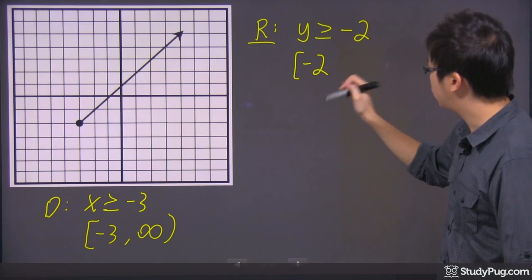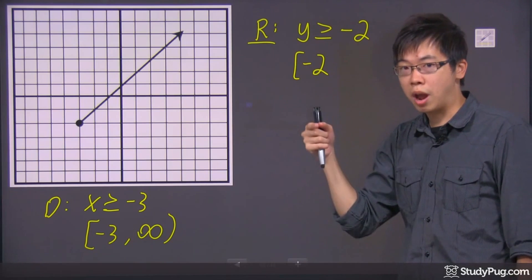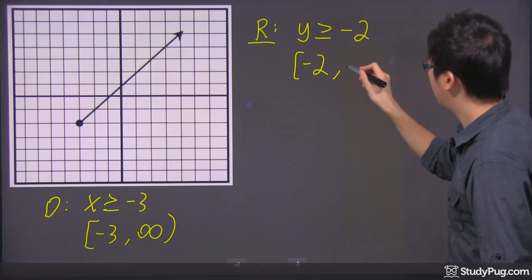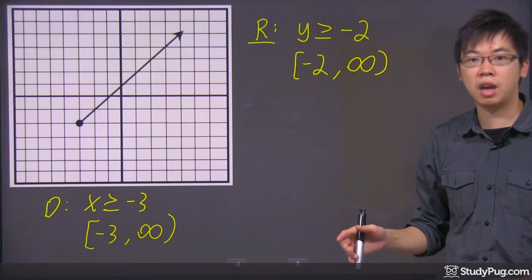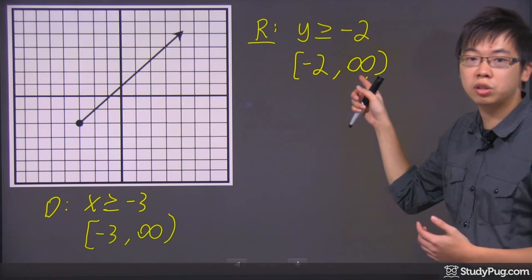It's going to be starting on the negative two. Again, it's a square bracket because it includes negative two. And again, it goes on infinitely. So I'm going to do a little curve bracket right here, meaning that it doesn't stop. It goes on infinitely to the top.